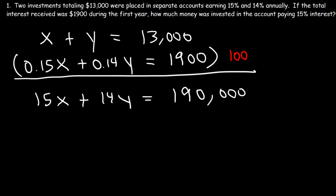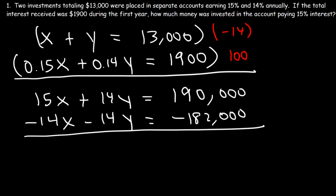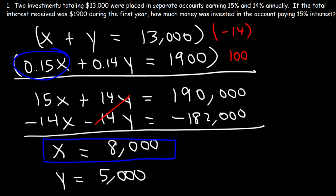Now let's solve by elimination — cancel the y variable. Multiply the first equation by negative 14: negative 14x minus 14y equals negative 182,000. Adding the two equations: 15 minus 14 gives x, the y's cancel, and 190,000 minus 182,000 is 8,000. So x equals $8,000 — that's how much was invested in the 15% account. The remaining $5,000 was placed in the 14% account.